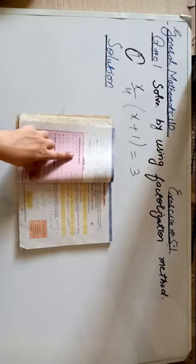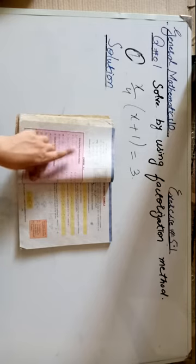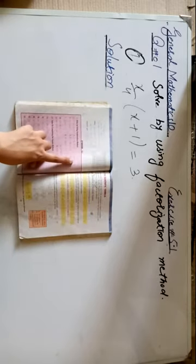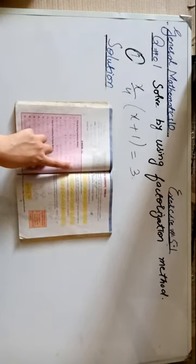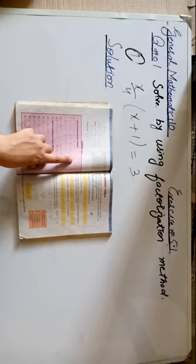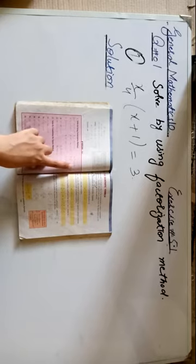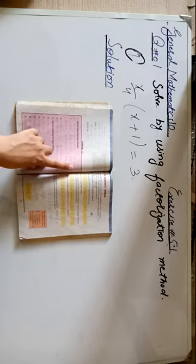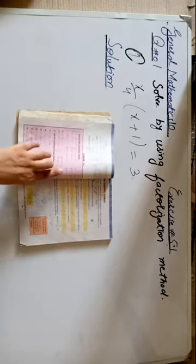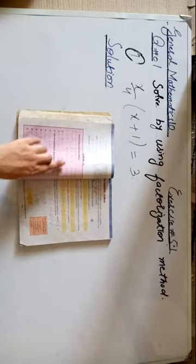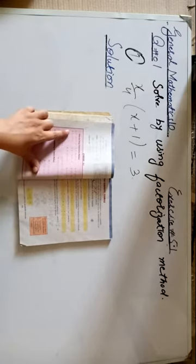Question number 3: x² = 8 - 7x. Rearranging by transposing 8 and -7x to the left side: x² + 7x - 8 = 0. This is now in standard form and can be solved the same way as Question 1.